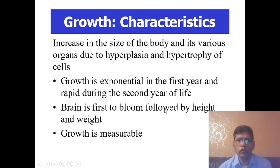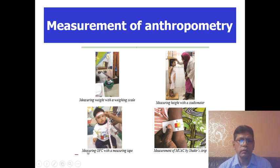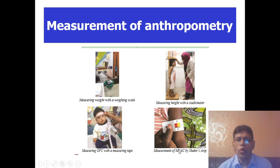Brain is first to bloom, followed by height and weight. Growth is measurable — the measurement of anthropometry. We measure weight with the weighing scale, height with the stadiometer, occipital frontal circumference with the measuring tape, and MUAC — mid-upper arm circumference — with the Shakir strip.